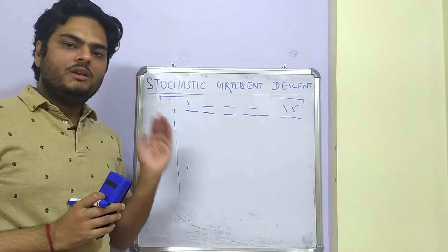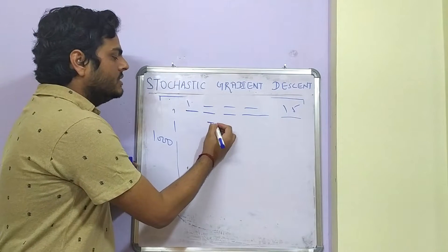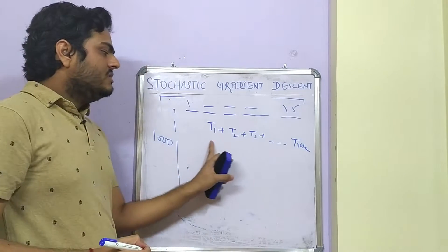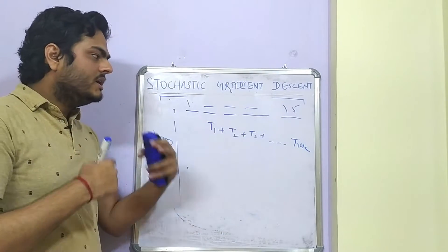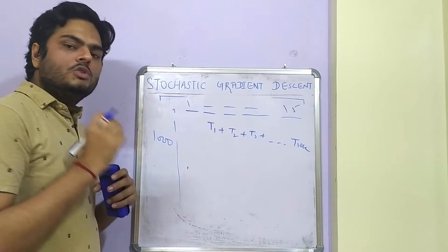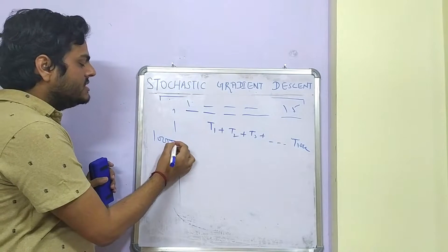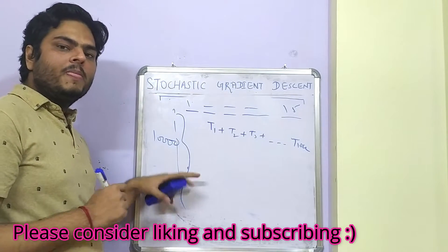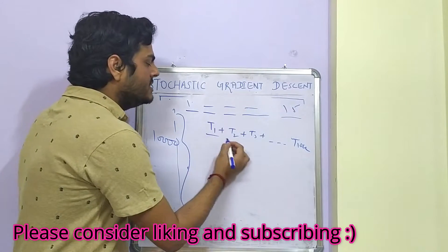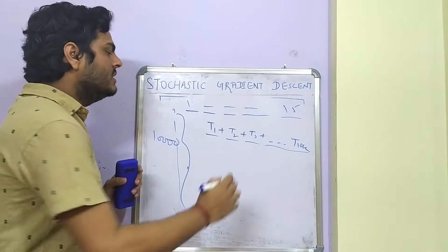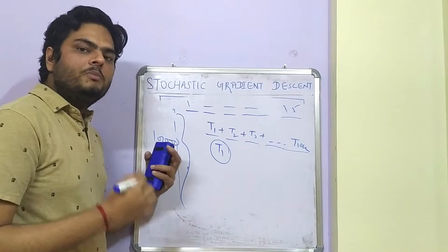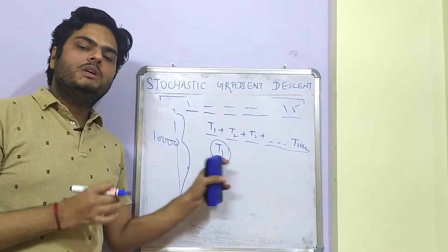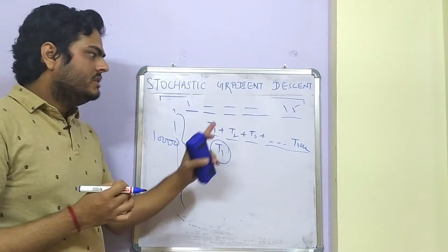That is where stochastic gradient descent helps us. We have term 1 plus term 2 plus term 3 up to term 10,000, and this loss function needs to be optimized against 15 individual variables. What stochastic gradient descent does is it does not take all 10,000 rows into consideration. Rather, it takes one random row, so this term has just one observation — T1 — and this one term needs to be optimized for the 15 features. The optimization becomes computationally simpler than normal gradient descent.